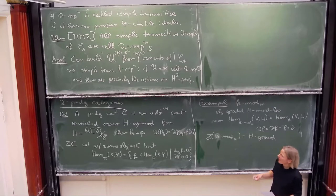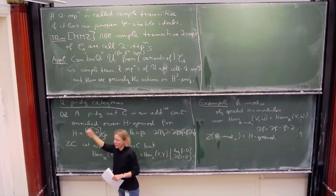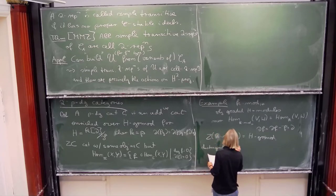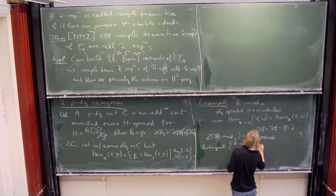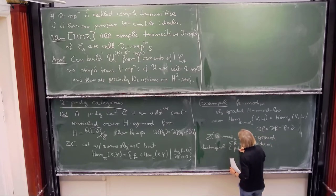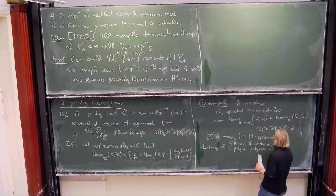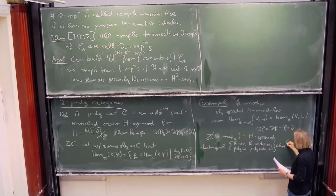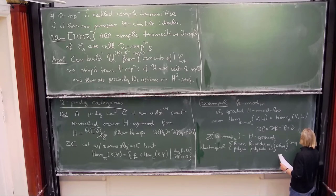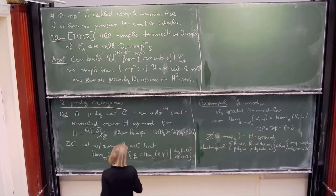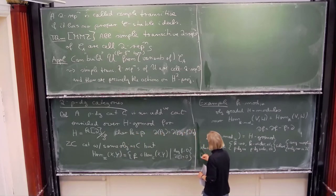The smallest example is K-mod-H, where objects are graded H-modules, morphisms are all linear maps, and the differential is del circ F minus F circ del. If you take Z of that you get back H-mod-K, allowing only degree-zero maps commuting with the action. When talking about PDG stuff we always need to distinguish whether isomorphisms or indecomposables live in Z of the category or in the full category. We introduce notation distinguishing K-isomorphisms and K-indecomposables from PDG-isomorphisms and PDG-indecomposables.